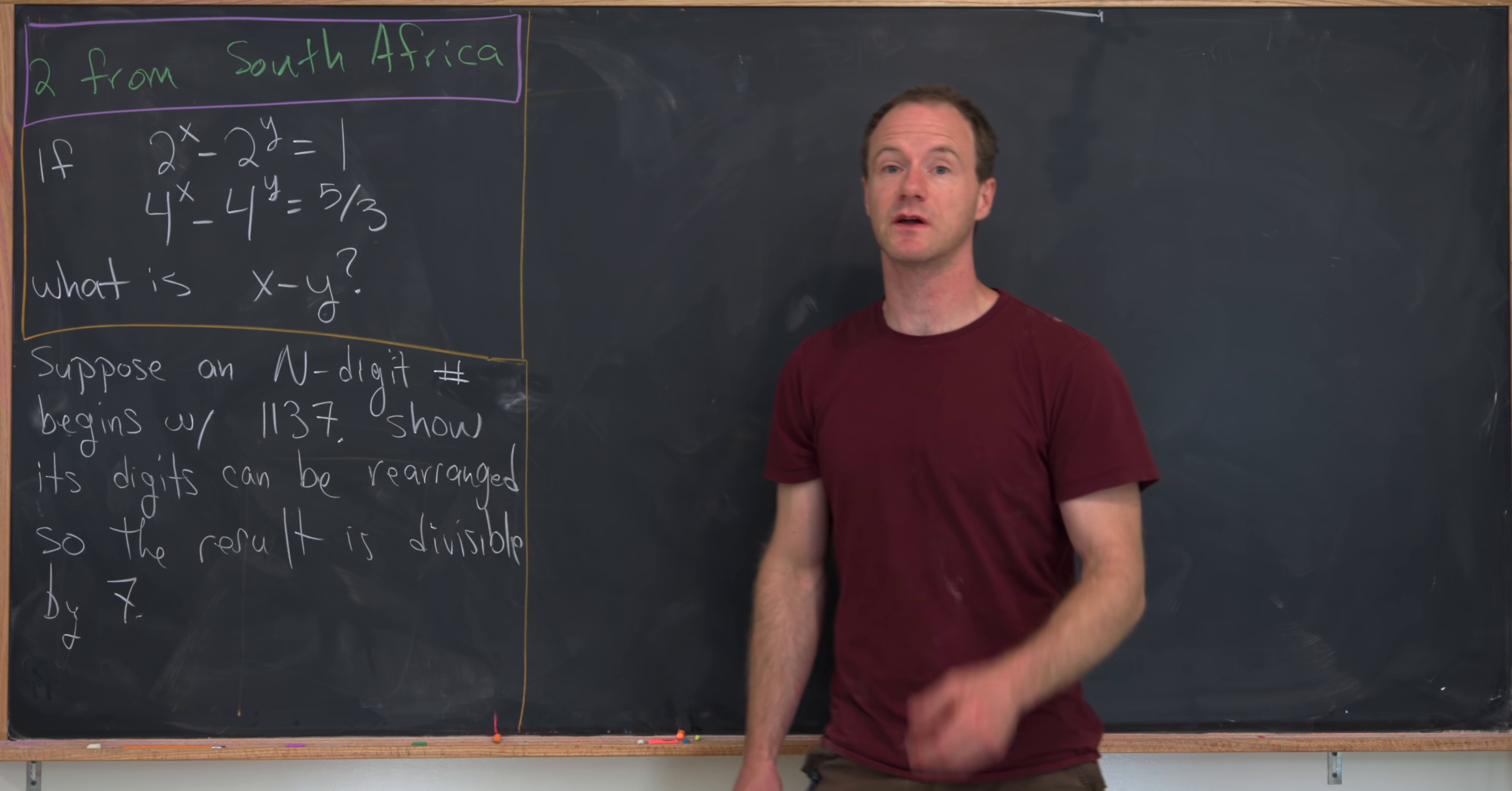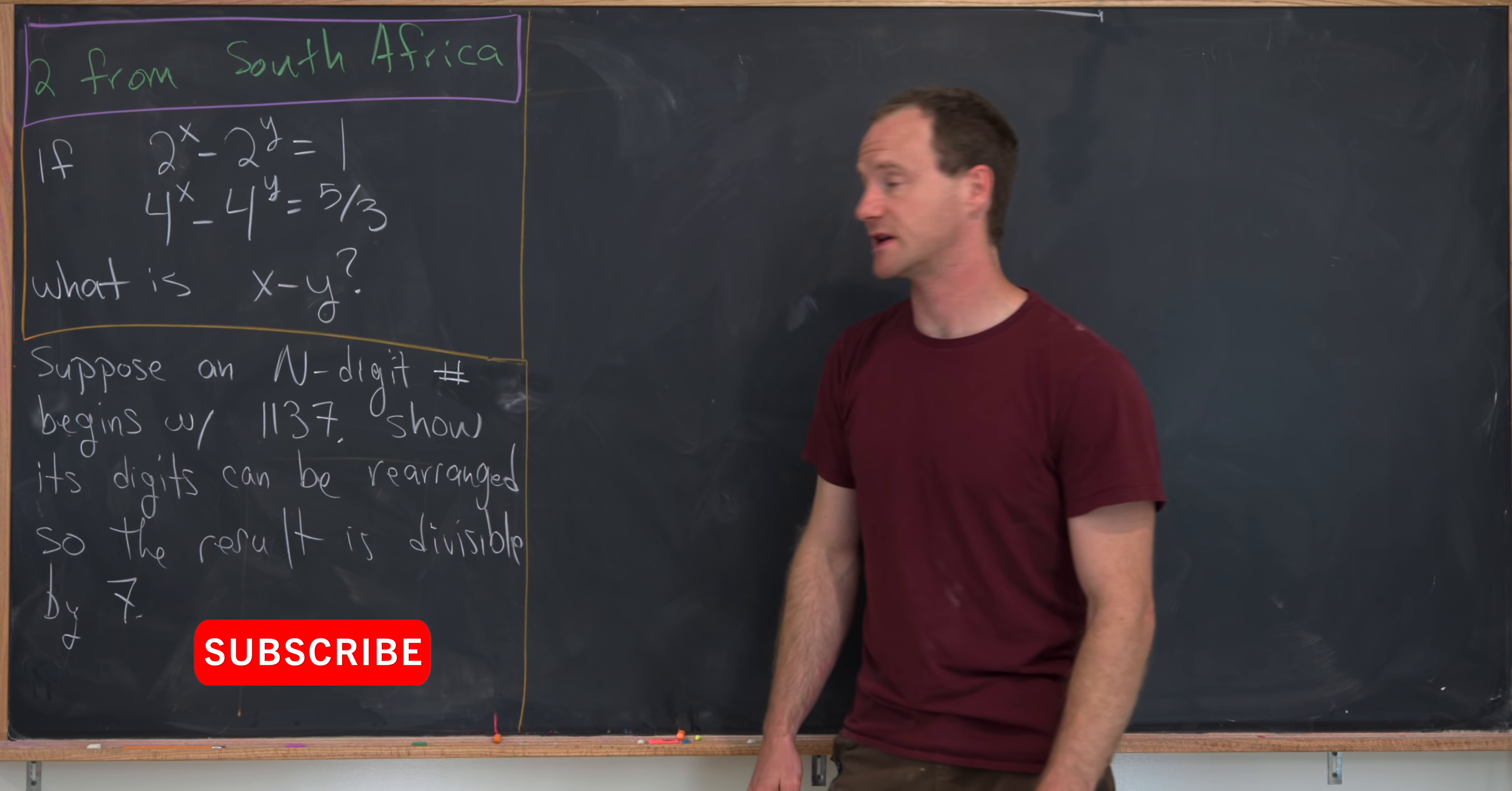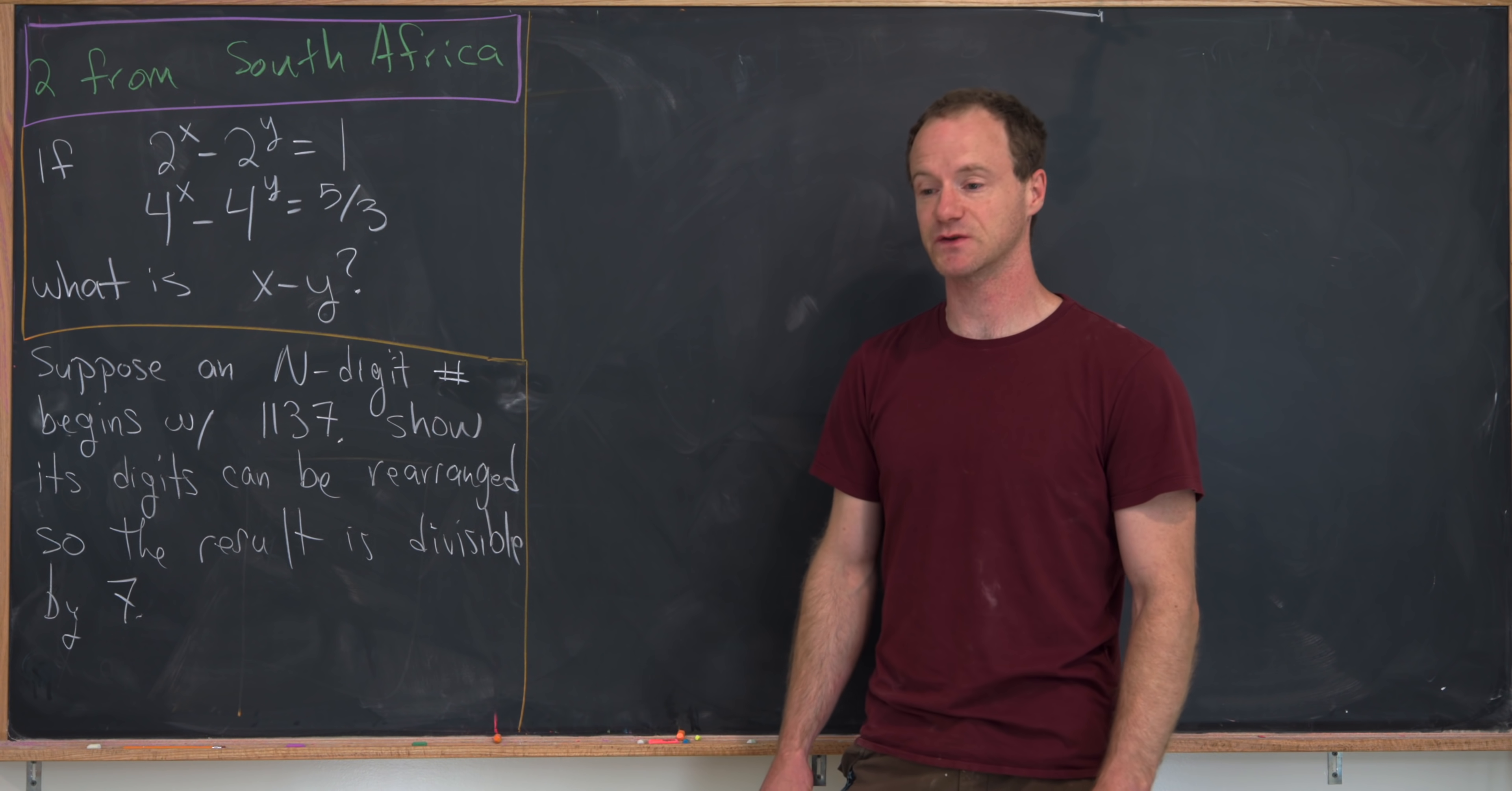Let's suppose that we've got real numbers x and y that satisfy the following system of exponential equations. We have 2 to the x minus 2 to the y is 1, and 4 to the x minus 4 to the y is 5 over 3. Our goal is not to find x and y, but to find x minus y.